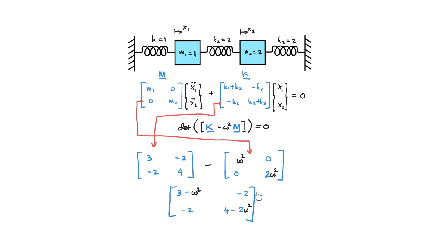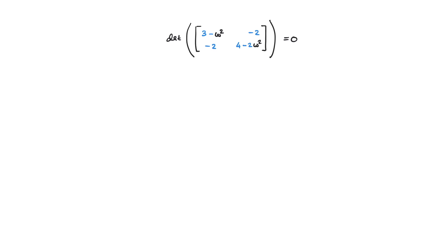This matrix must have a determinant equal to zero. As a reminder, for a square matrix with elements A, B, C, D, the determinant is the product of diagonal elements A multiplied by D (positive) minus C multiplied by B (negative), giving us AD minus CB.